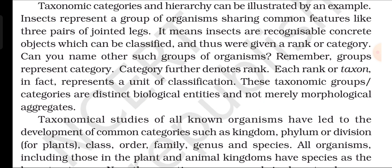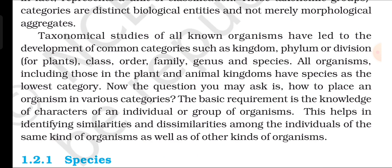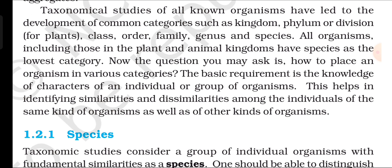These taxonomic groups or categories are distinct biological entities and not merely morphological aggregates. Taxonomical studies of all known organisms have led to the development of common categories such as kingdom, phylum or division (for plants), class, order, family, genus, and species. All organisms, including those in the plant and animal kingdoms, have species as the lowest category. The basic requirement for placing an organism in various categories is the knowledge of characters of an individual or group of organisms, which helps in identifying similarities and dissimilarities among organisms.